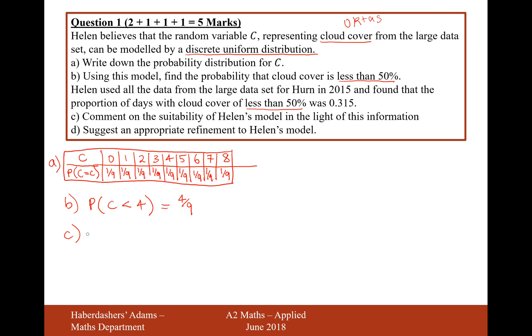Let's just grab a calculator and work out what 4 over 9 is. I think that's 0.4 recurring. So this thing here equals 0.4 recurring, and Helen finds that the value is 0.315, which is actually quite a bit lower than 0.4 recurring. So comment on the suitability of Helen's model in light of this information. It's not particularly suitable, not suitable because the probabilities are quite different.